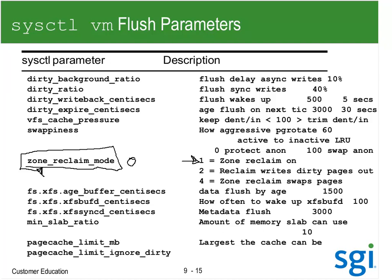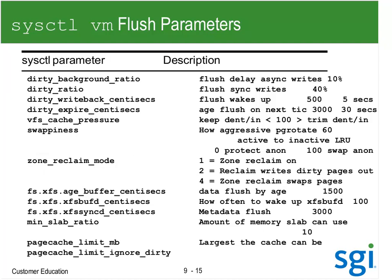Zone reclaim on ensures that all of your memory allocations are going to be on node and on socket. There's another value: two means reclaim by writing dirty pages out, and four means reclaim any swap pages - anything that's out on swap, get rid of it. One is the default. Besides dirty expire centiseconds, we have XFS's centiseconds: dirt age, data flush by age, set to 15 seconds, while the system one is set to 30 seconds.